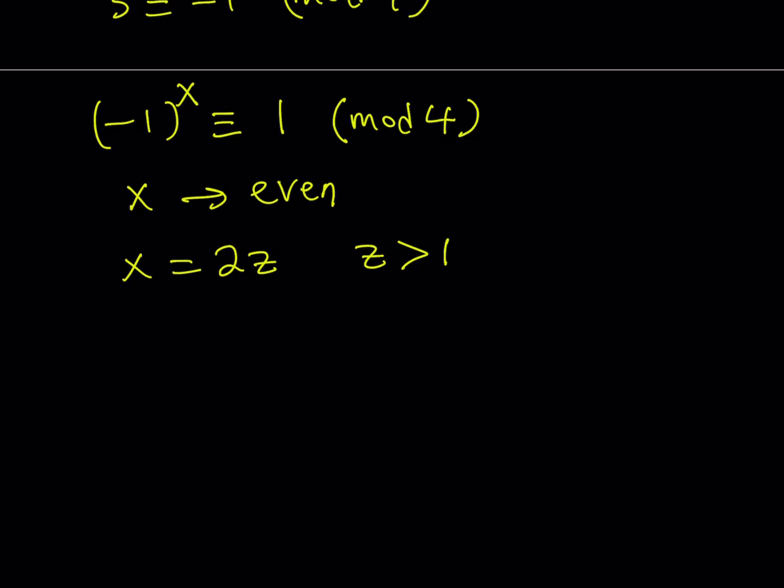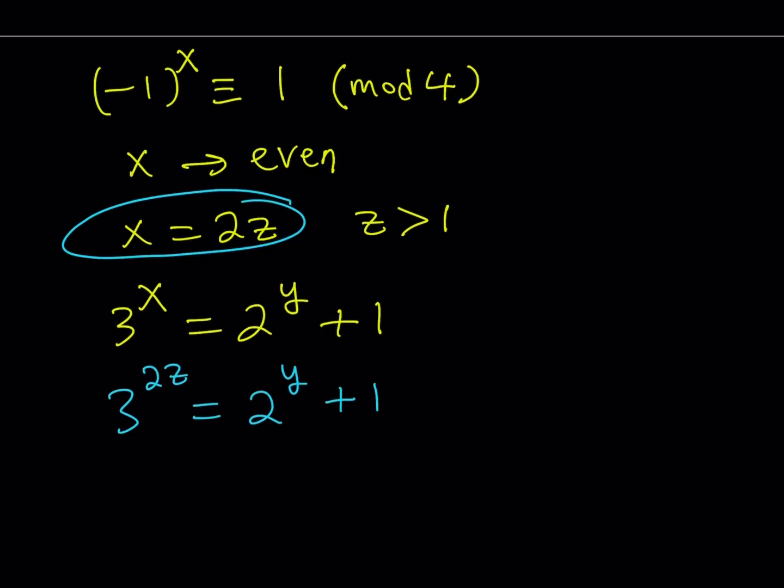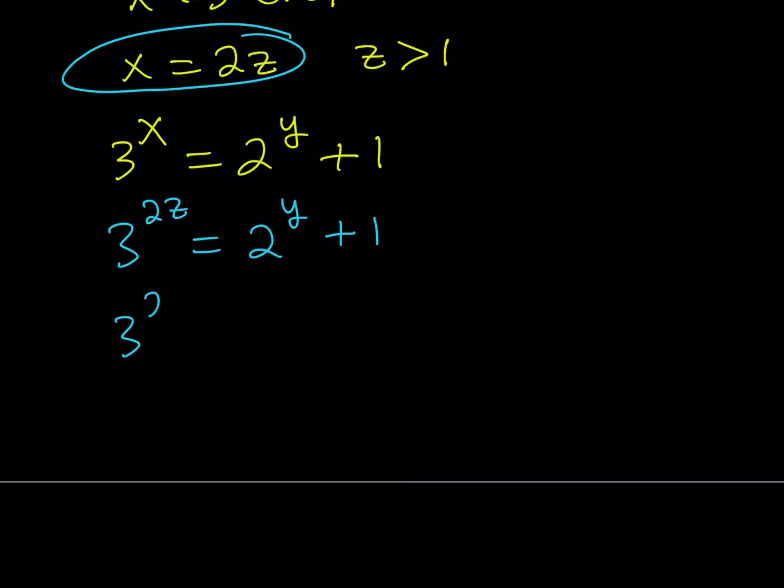And that's going to be a good thing, because now we have 3 to the power x equals 2 to the power y plus 1. And now what this gives me is if I replace x with 2z, then I get 3 to the power 2z equals 2 to the power y plus 1. This may not look significant, but if you think about subtracting 1 from both sides, it's going to be super duper helpful. Because on the left-hand side we are getting a perfect square. This can be written as 3 to the power z squared minus 1 squared, which is a perfect square, and then it equals 2 to the power y.